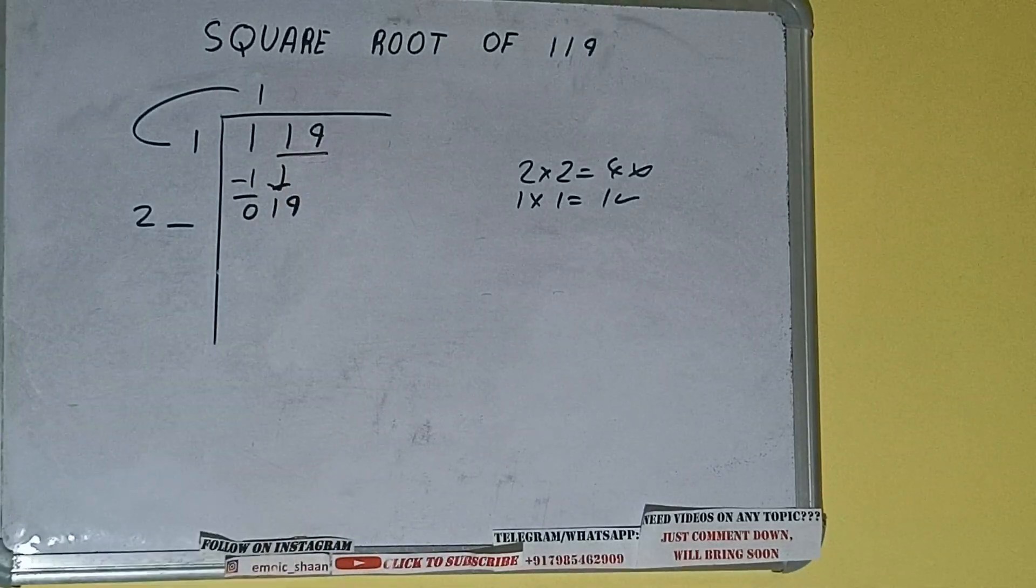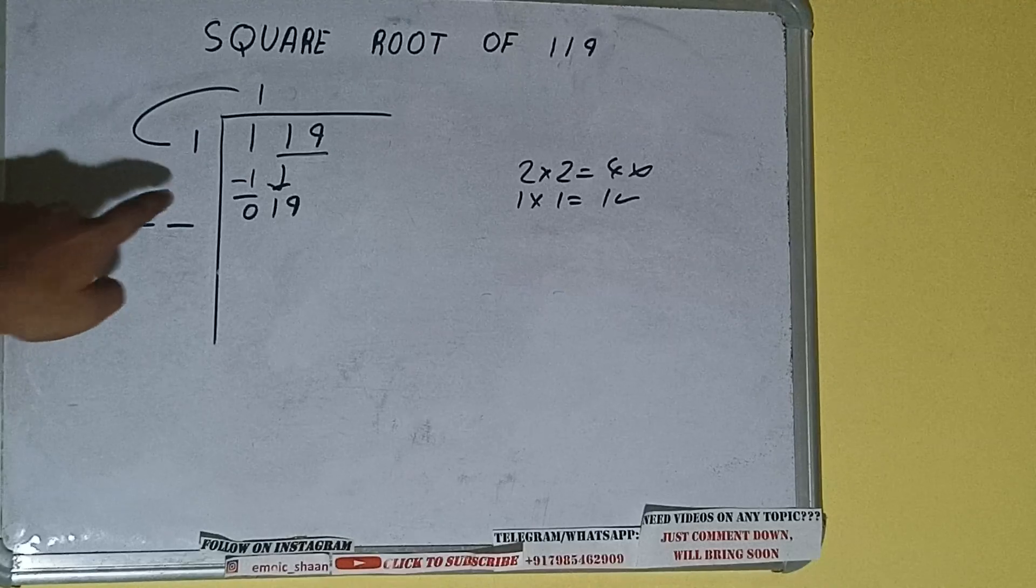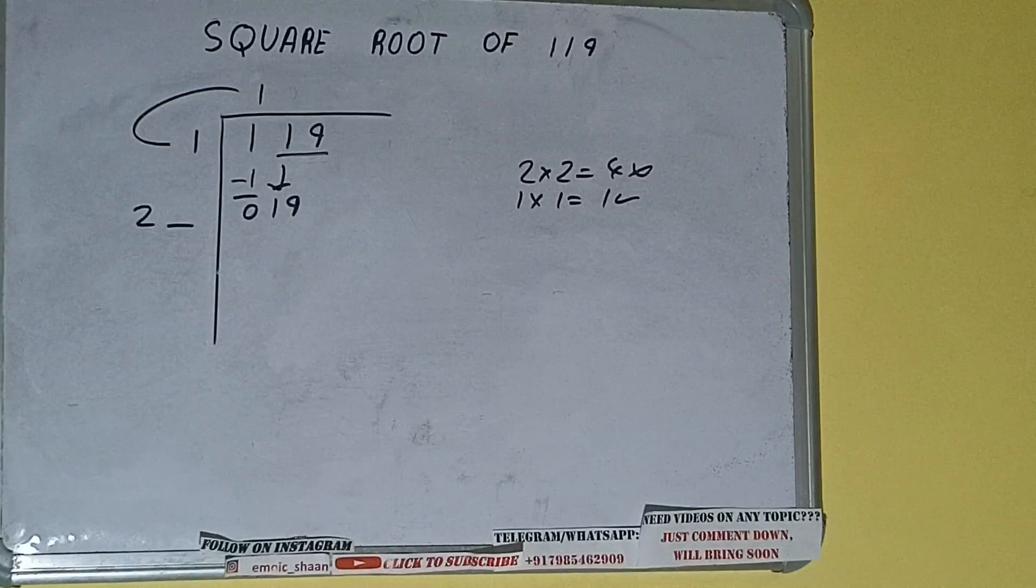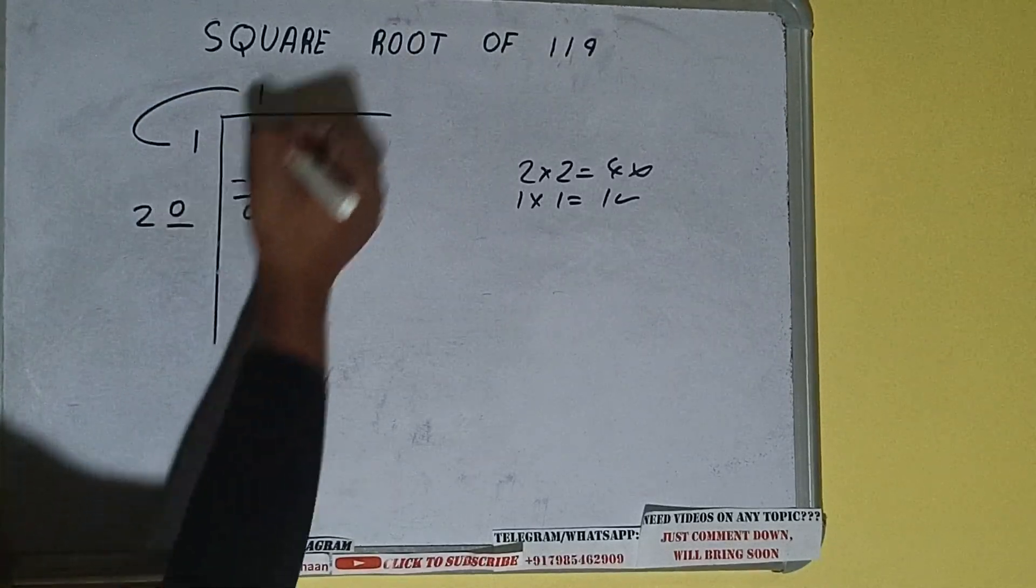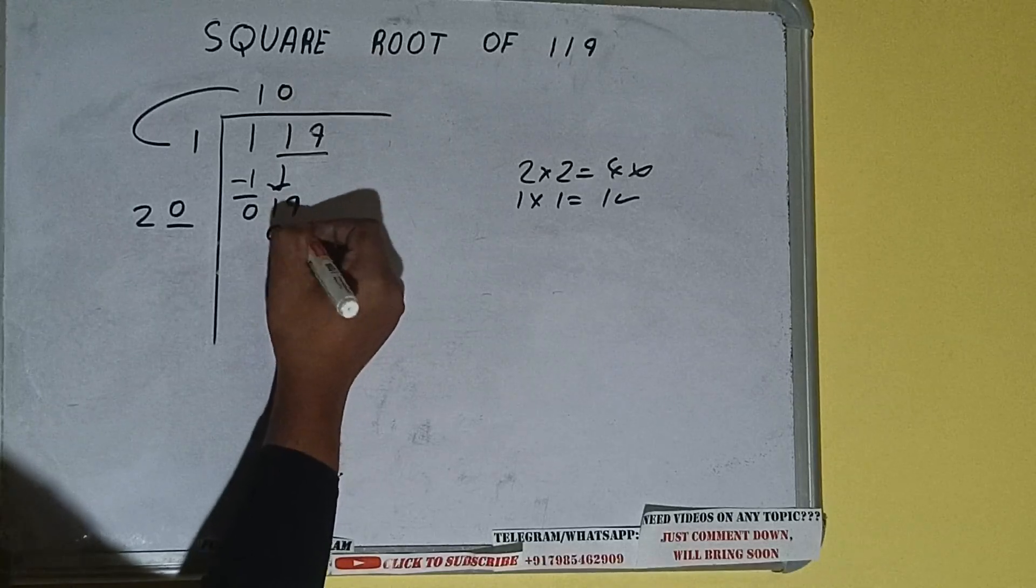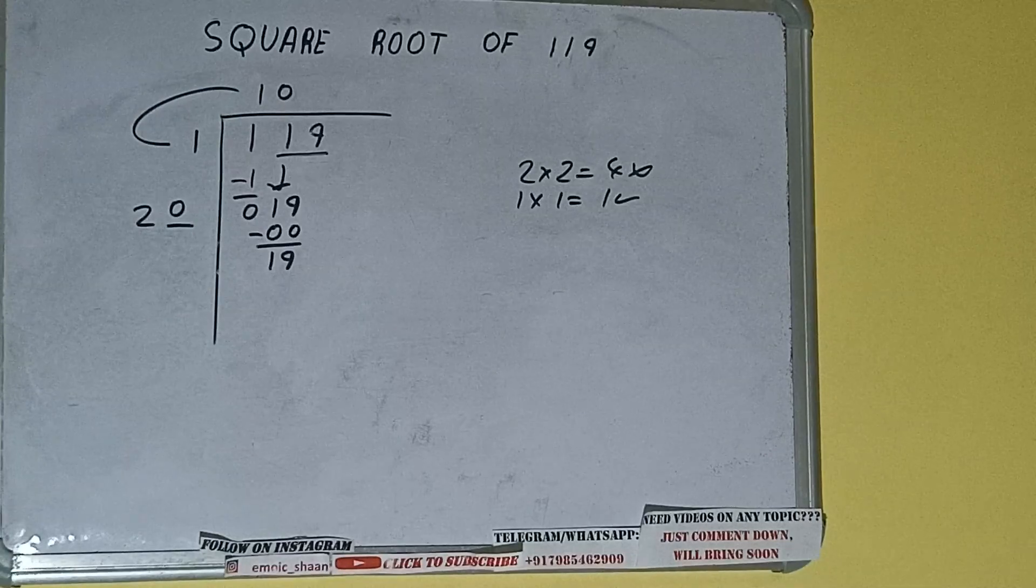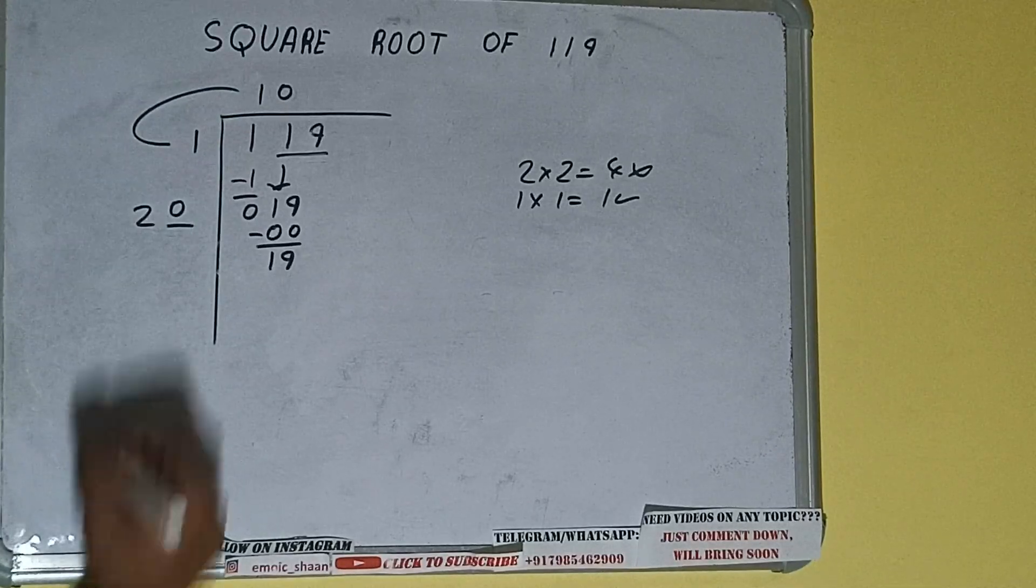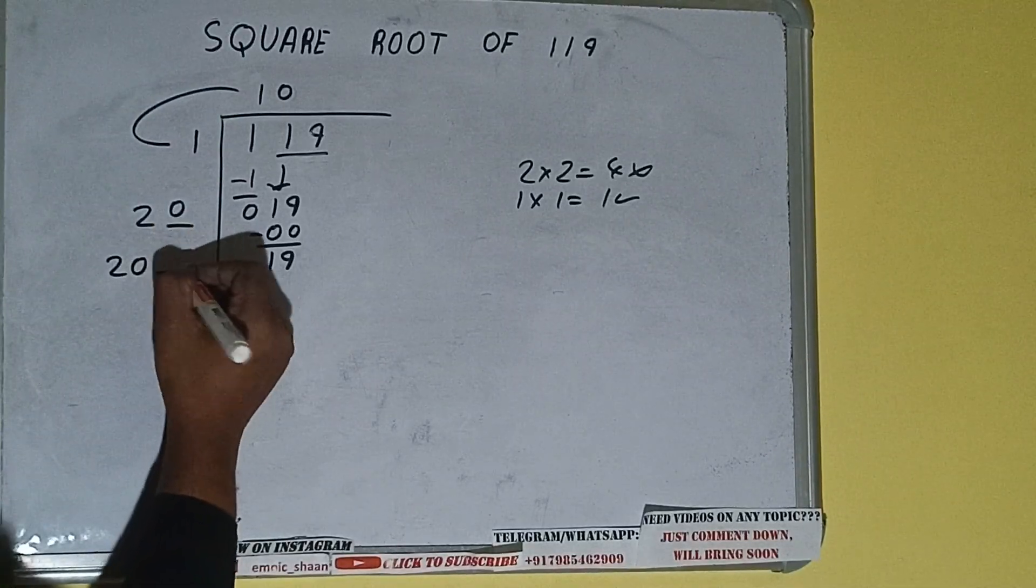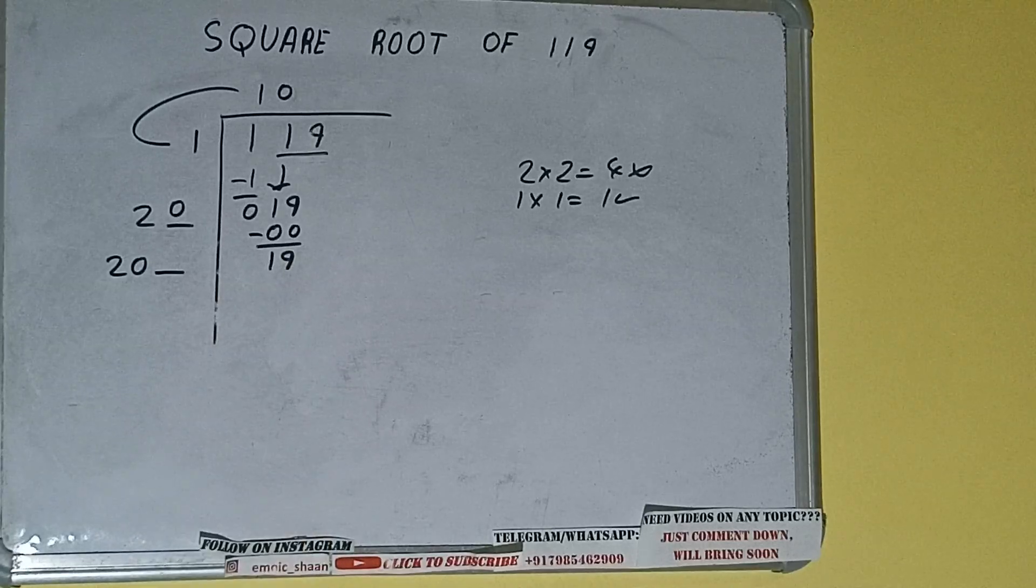Bring the next pair down and it will be 19. Now whatever number we write here we have to write here also. So we can write 0 here and 0 here. 0 subtract, 19 will be left. 20 into 0 we did, so add both. 20 plus 0 will be once again 20, but 1 digit extra, and this number we need to make it big.